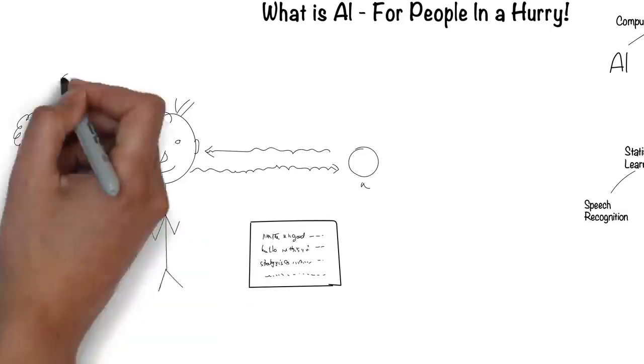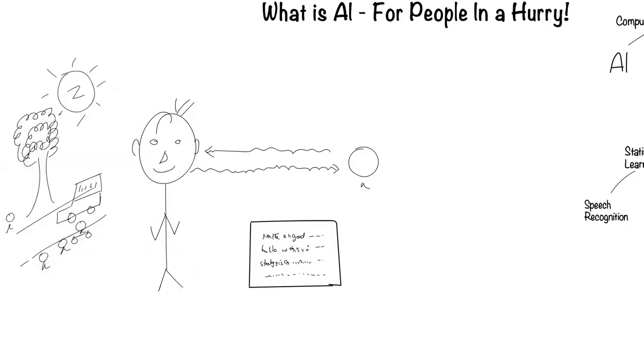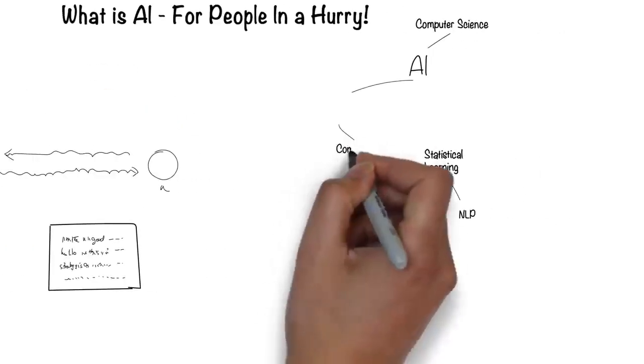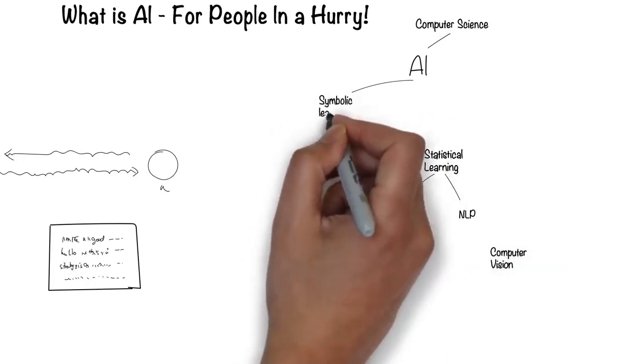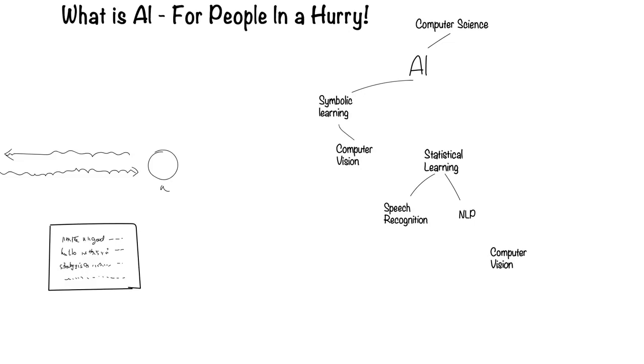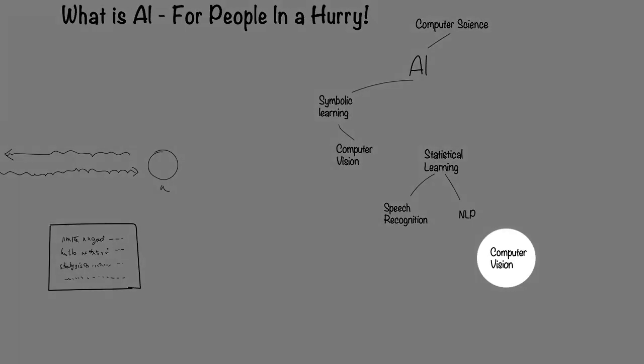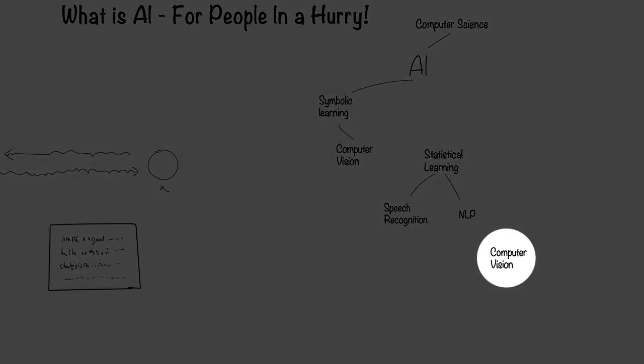Humans can see with their eyes and process what they see. This is the field of computer vision. Computer vision falls under the symbolic way for computers to process information. Recently, there's been another way, which I'll come to later.